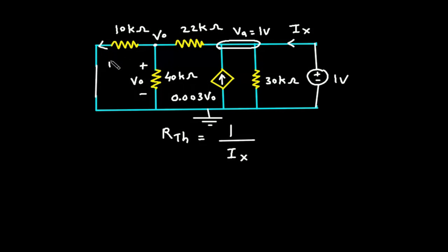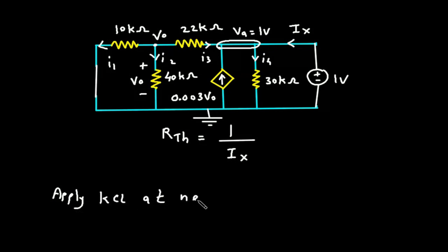Let's say this is current I1, this is current I2, this is current I3, and this is current I4. Applying KCL at node VO: the entering current at this node is 0, so all the currents are leaving — I1 plus I2 plus I3 is equal to 0.